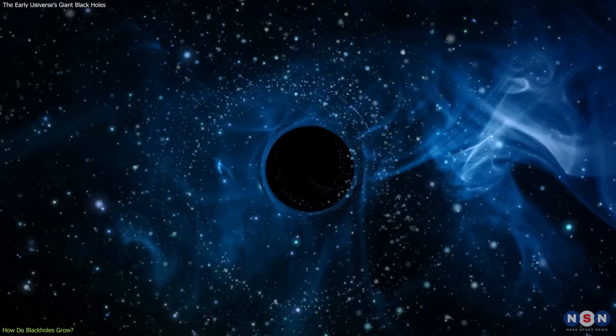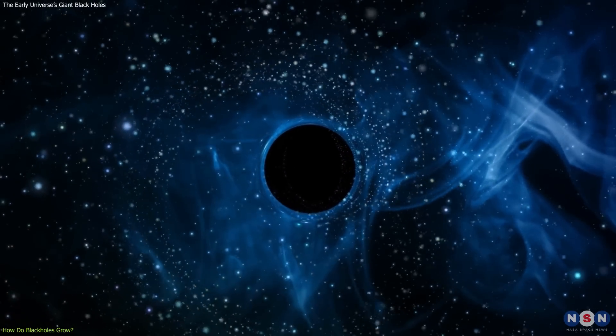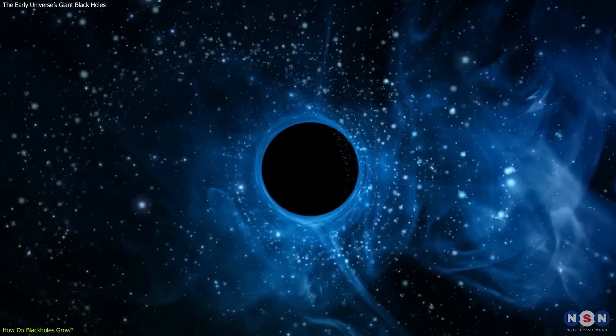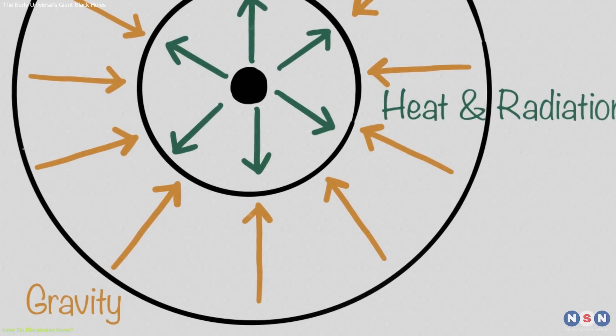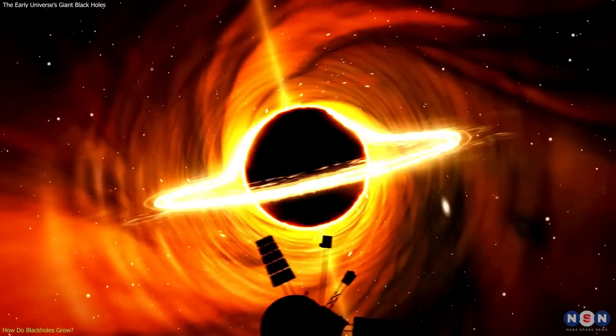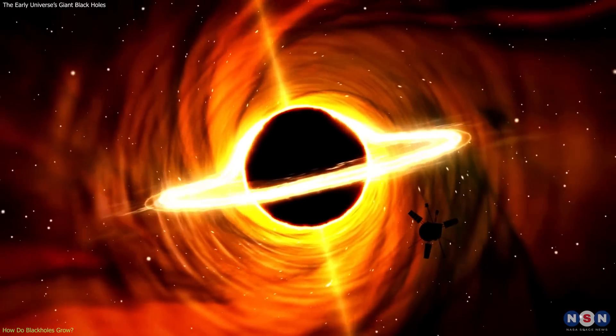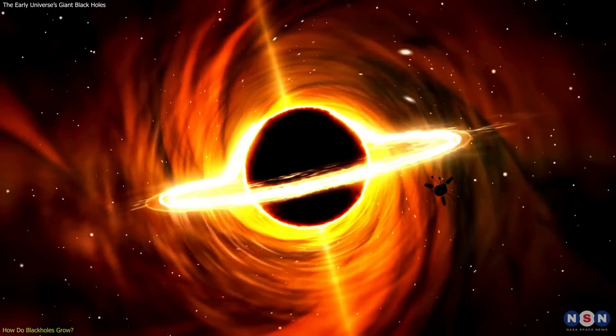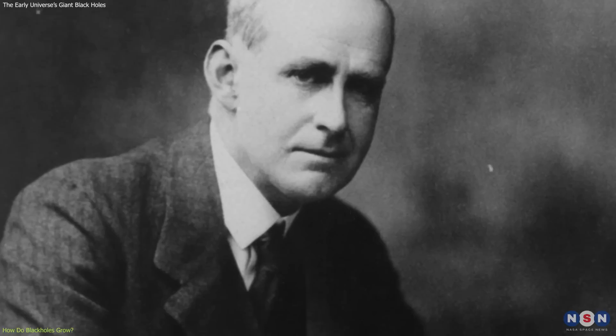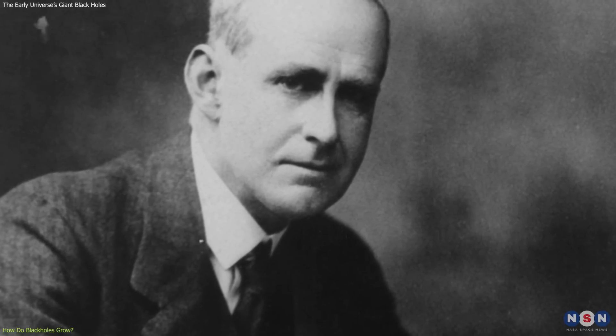But there is a limit to how fast a black hole can grow by accretion. This limit is set by the balance between gravity and radiation pressure. Gravity pulls matter inward, while radiation pressure pushes it outward. If the radiation pressure is too strong, it can prevent more matter from falling into the black hole. This is called the Eddington limit, named after the British astronomer Arthur Eddington, who first proposed it in 1920.